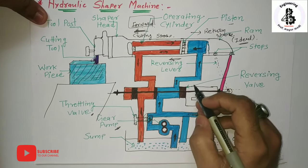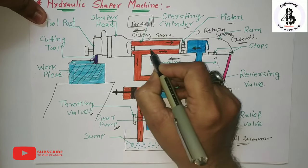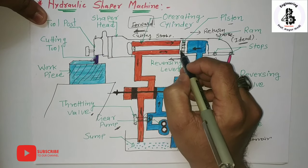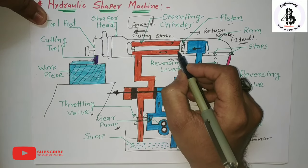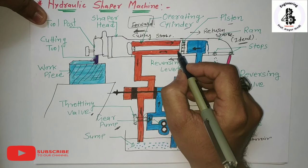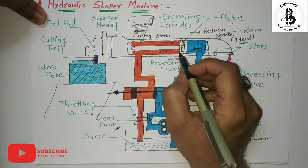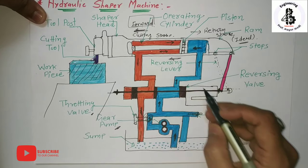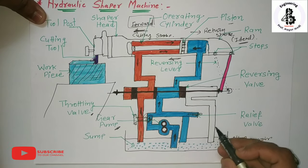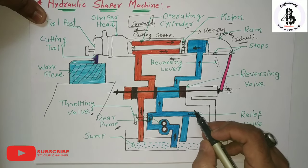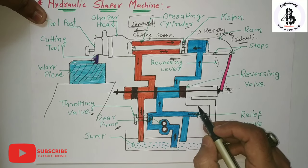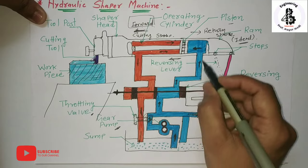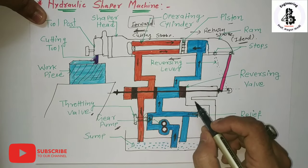Third, the reversal of the ram is obtained quickly without any shock, as oil on the other end of the cylinder provides a cushioning effect. Fourth, the relief valve ensures the safety of the tool and machine when the machine is operating under overload conditions.